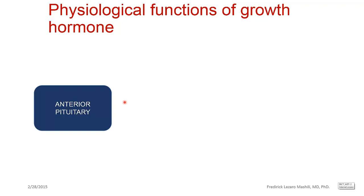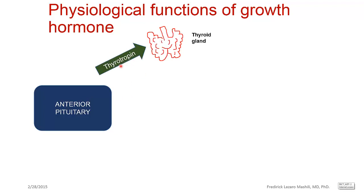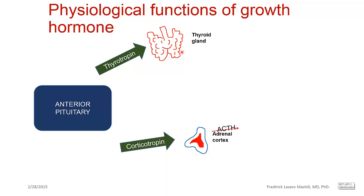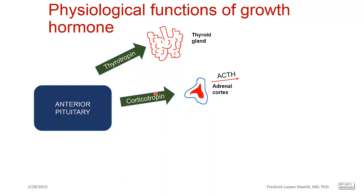Let us take a closer look at the anterior pituitary. The anterior pituitary produces a number of peptide hormones. One good example is thyroid stimulating hormone, also known as thyrotropin. The function of thyrotropin is to stimulate the thyroid gland to produce thyroid hormones. We also have corticotropin, also known as adrenocorticotrophic hormone, ACTH.